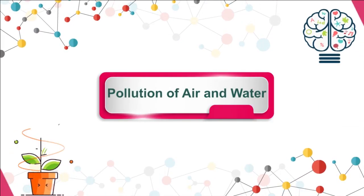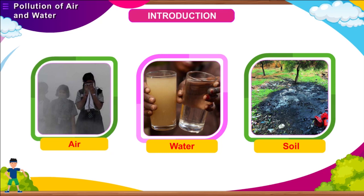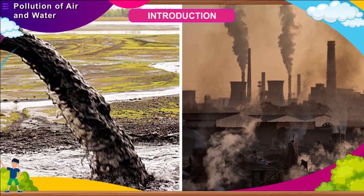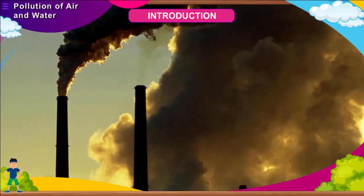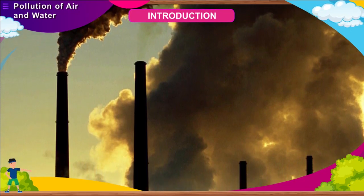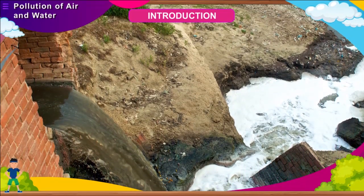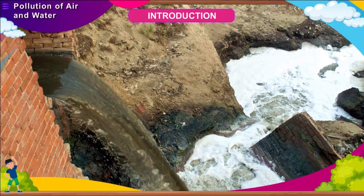Pollution of air and water. When unwanted and harmful things mix with the air, water or soil, it is said to be contaminated. Contamination of air, water or soil is what we call pollution. Pollution is the mixing of unwanted substances with any pure substances. These unwanted substances are generally harmful to the life of humans, animals and plants. Such substances are termed as pollutants.